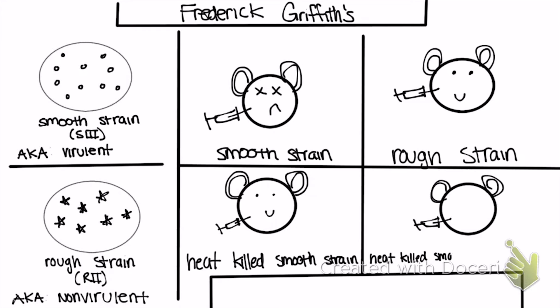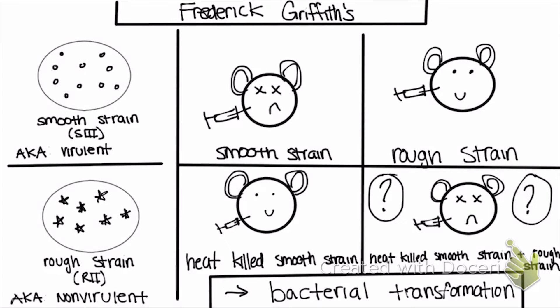So he tried it. He mixed heat-killed smooth strain with the rough strain and injected it into the mouse. What ended up happening was the mouse died. It's weird because two things that cause a mouse to live when mixed should theoretically make the mouse live. That was not the case. So a term came up which is bacterial transformation, which is essentially turning something that is non-virulent or not alive into a live strain. When he mixed the non-virulent with the dead virulent or heat-killed virulent, it somehow turned it into a live strain that killed the mouse.